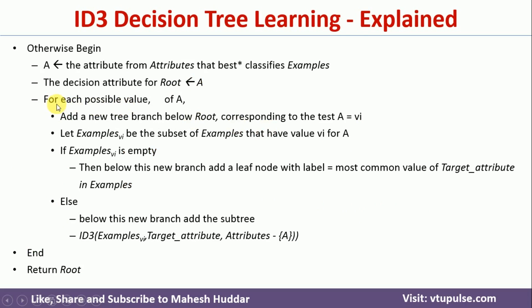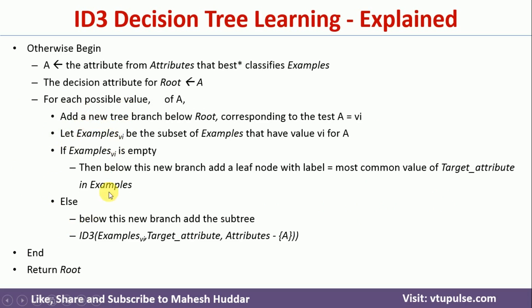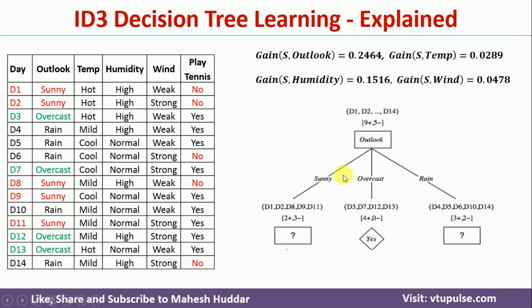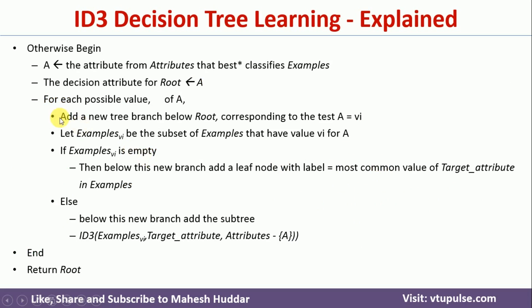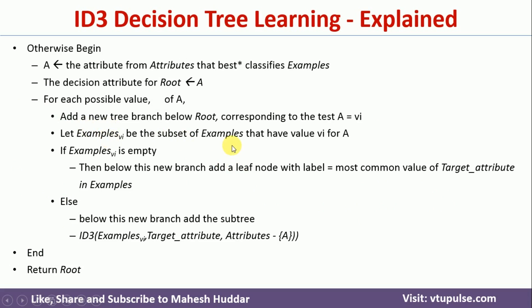Next, for each possible value of A — where A is outlook — the possible values are sunny, overcast, and rain. For each of these possibilities, we add a new tree branch below the root corresponding to that value. So three branches are added: sunny, overcast, and rain. We then take the subset of examples for each branch — only sunny examples, only overcast examples, and only rain examples.